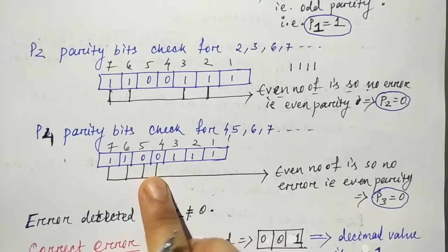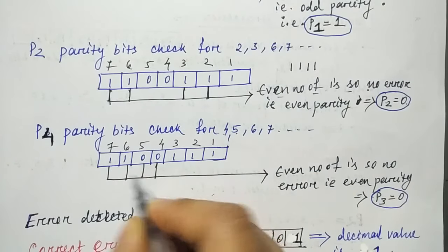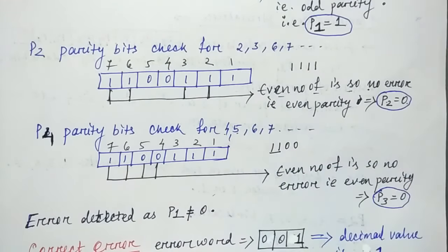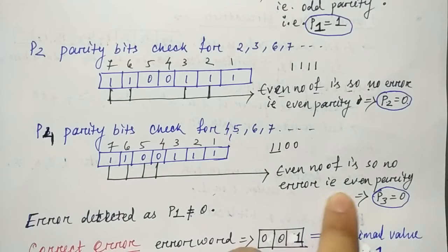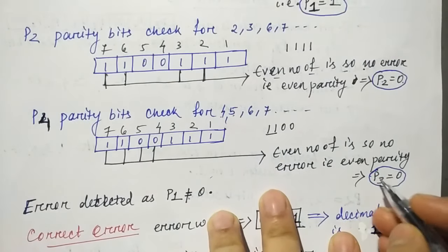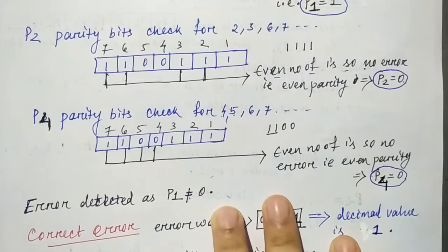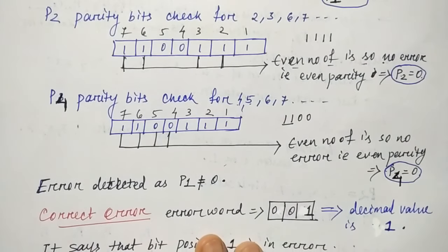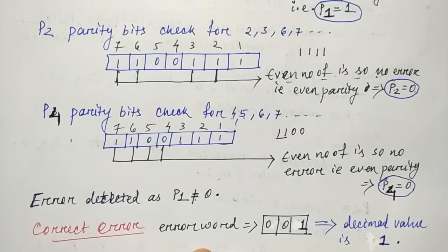Then P4 checks positions 4, 5, 6, 7. So data is 1, 1, 0. Here there is an even number of ones. So again, even parity and P4 value is 0. Now this is clear. So what is the total value of the three parity bits?